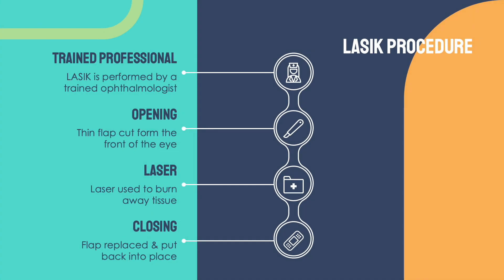LASIK is performed by a trained ophthalmologist. First, a thin flap is cut from the front of the eye. Then, a laser is employed to burn away tiny amounts of tissue within the eye in a particular pattern. Finally, the flap is replaced and put back in place. The entire process takes roughly 10 minutes per eye.